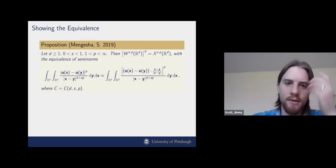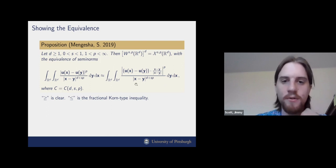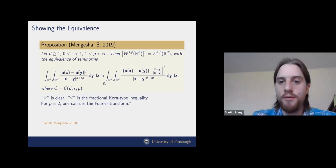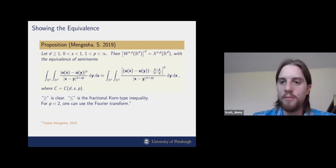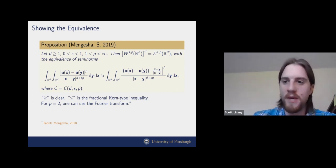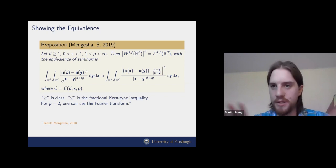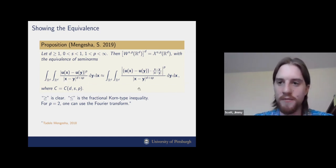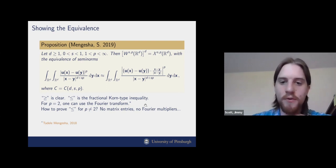To show the equivalence — that the W^{s,p} semi-norm is controlled by the projected difference quotient semi-norm — the implicit constant is independent of u. For p=2, in the quadratic case, one can use the Fourier transform to see the equivalence of Fourier multipliers. But we were interested also in Sobolev embedding results and in the full calculus of fractional Sobolev spaces for general p, so that energies from peridynamics inherit all those relations.